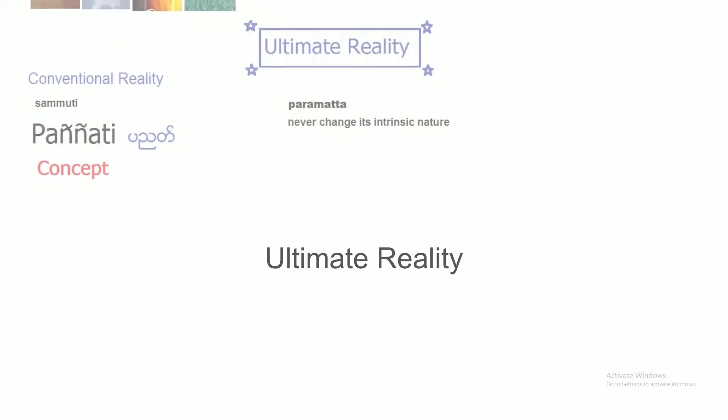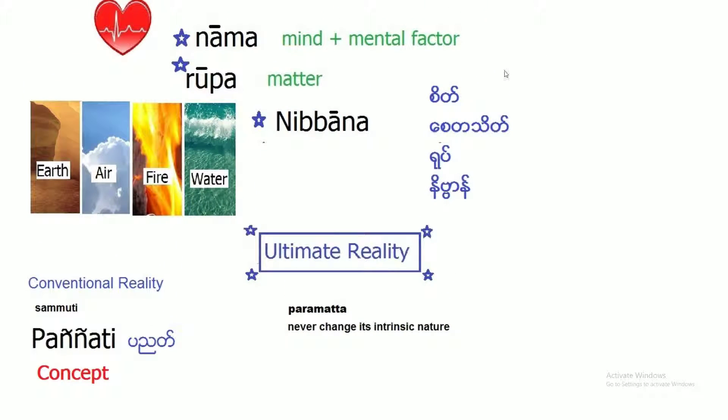So let's try to remember the four ultimate realities. In Myanmar language, citta, cetasika, rupa, nibbana is Paramatthasa or ultimate reality. The nama, combination of the mind, consciousness and mental factors. And rupa is matter and nibbana. There are four ultimate realities. We call it Paramatthasa. Never change its intrinsic nature, it's permanent. So conventional reality in Pali, Pannatti or concept. It's changed and conditional.